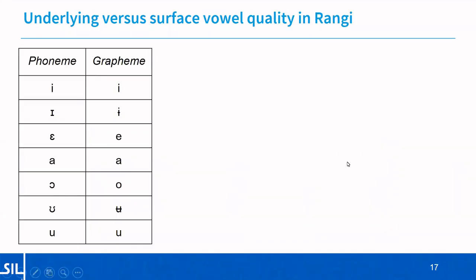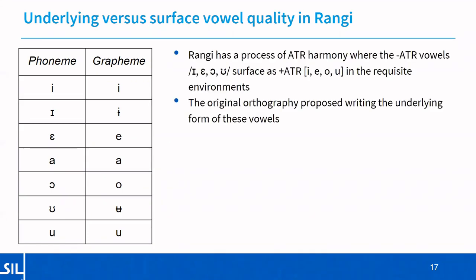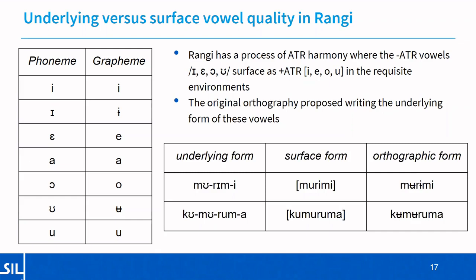Turning to Rangi and underlying versus surface vowel quality — Rangi has gone through a process of moving from an orthography which represents the underlying form to one which represents vowel quality more transparently. Rangi has seven phonetic vowel qualities, and a leftward-spreading ATR harmony process operates so that minus-ATR vowels surface as plus-ATR when the plus-ATR high vowels E and U appear later in the word. The original orthography proposed writing the underlying forms. So in the word for farmer, the class-one prefix, root, and agent suffix cause the surface form 'murimi', whereas the orthographic form kept the underlying quality using barred vowel graphemes.